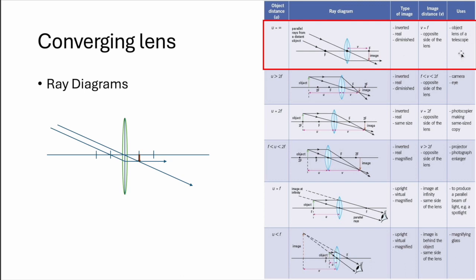So what happens if the item is more than two focal points away, then same. Draw the straight one, then the bent one, and this is what you'll get. Same also, inverted real diminish, and the uses will be for camera and your eyesight.